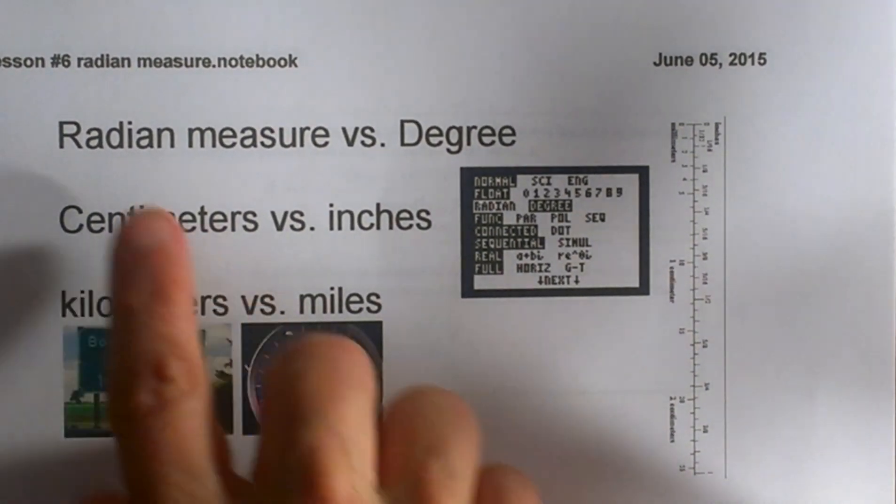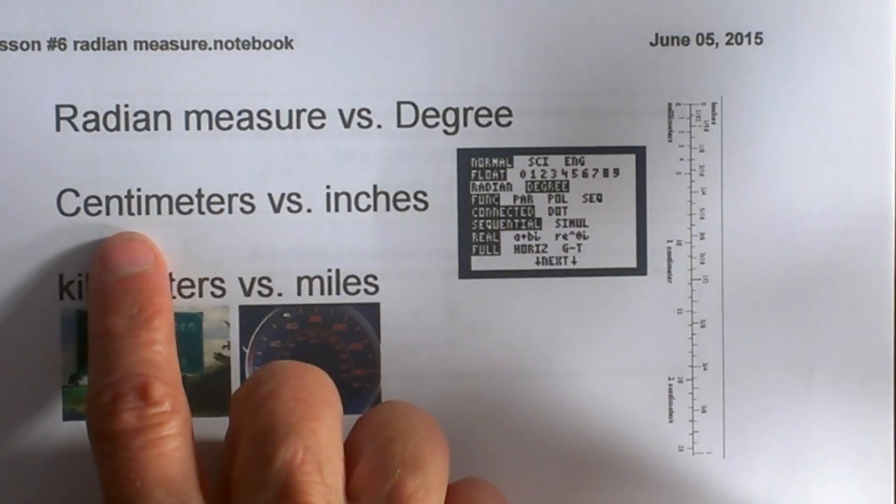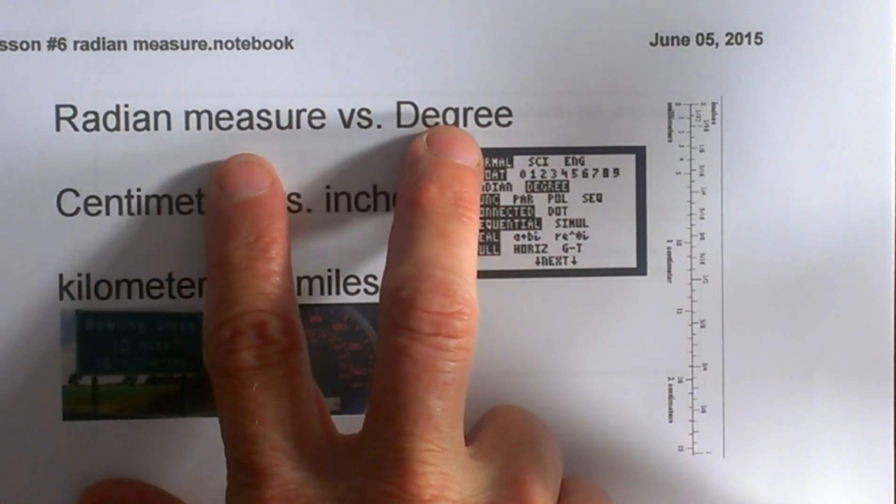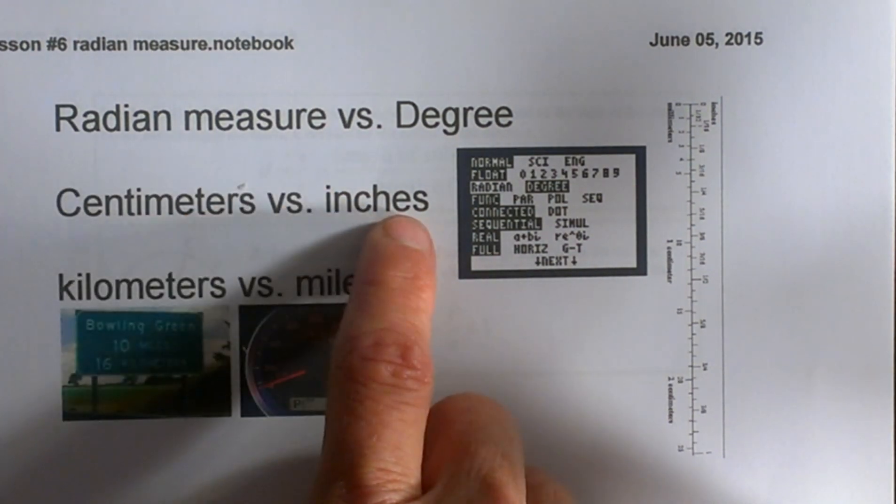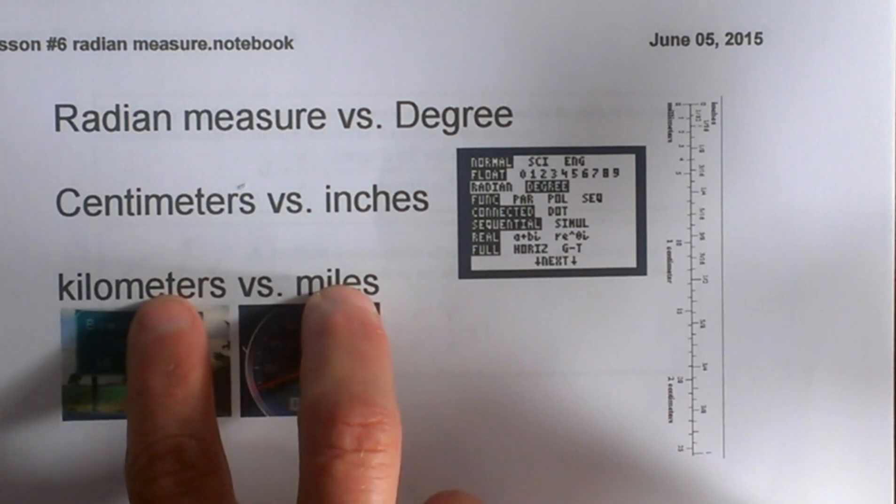Hey, welcome to Moo Moo Matt. Today we are going to look at radian measure versus degrees. Think of a radian measure as just another unit of measure, similar to a centimeter versus inches and a kilometer versus miles.